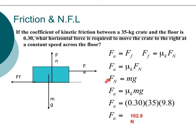Since normal force equals mass times gravity, the applied force equals coefficient of friction times mass times gravity. With a coefficient of 0.30, mass of 35 kilograms, and gravity of 9.8 meters per second squared, we calculate the applied force as 102.9 newtons.